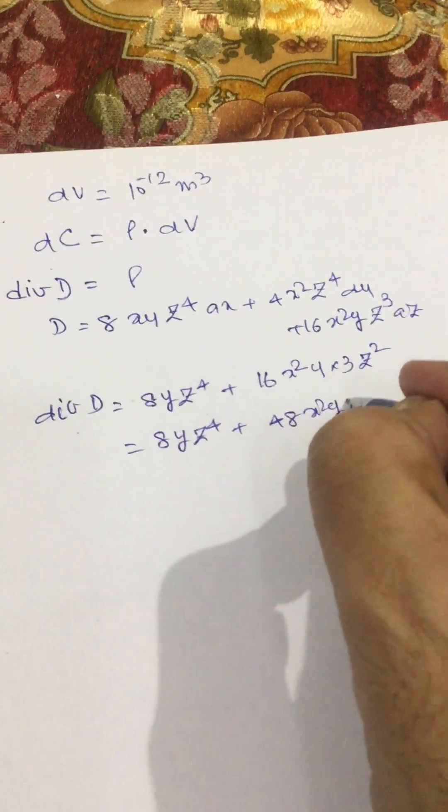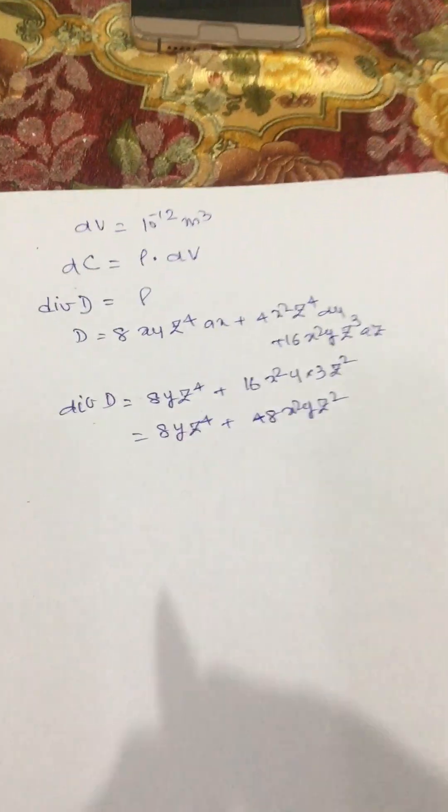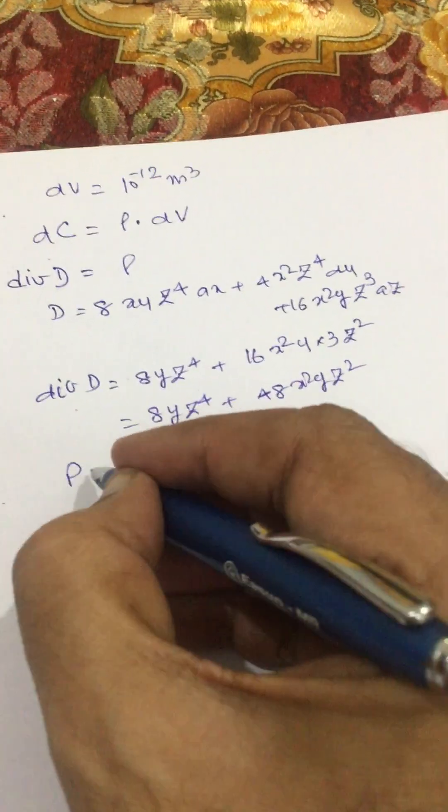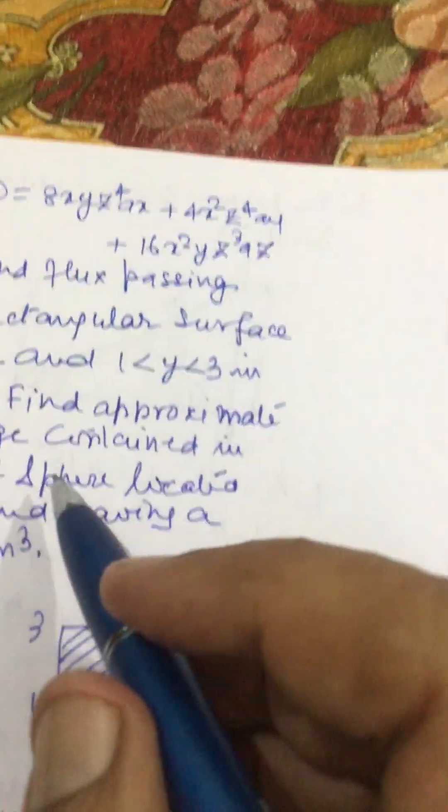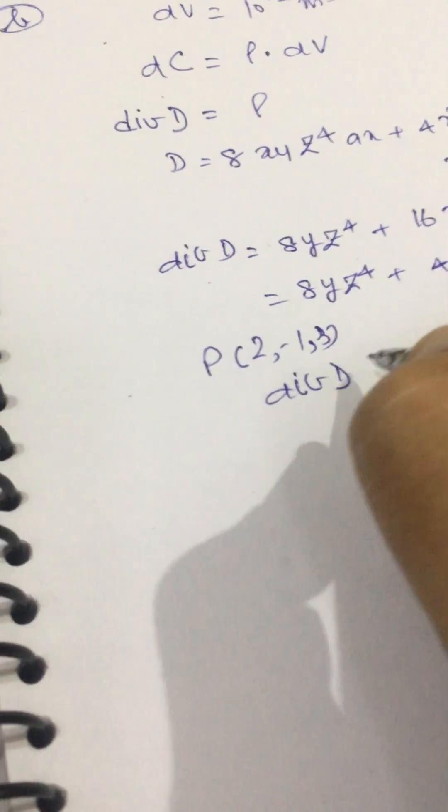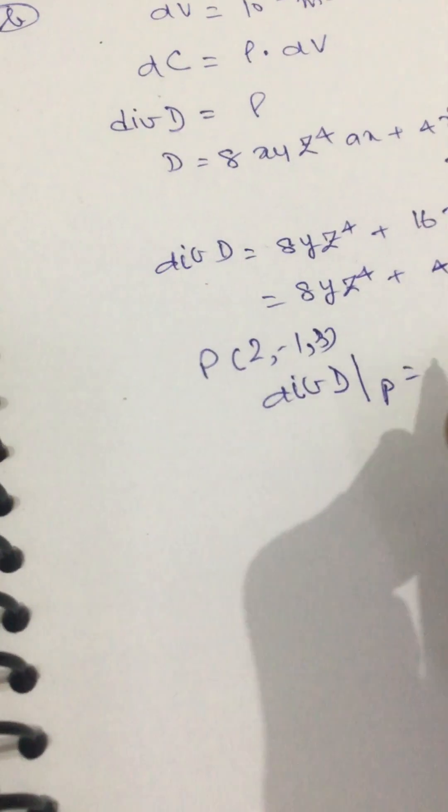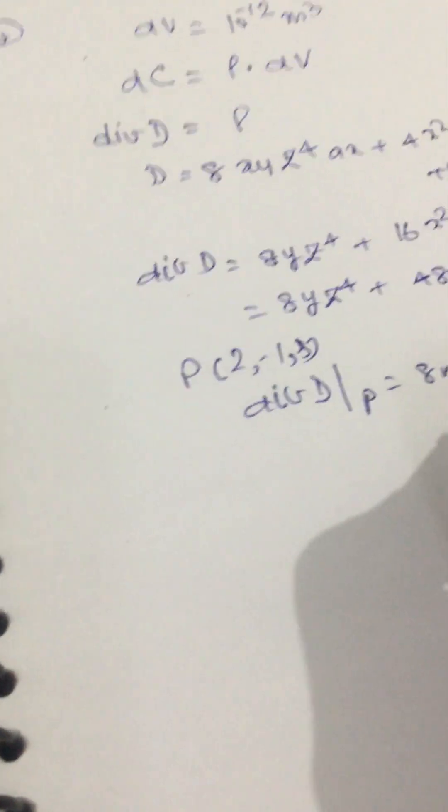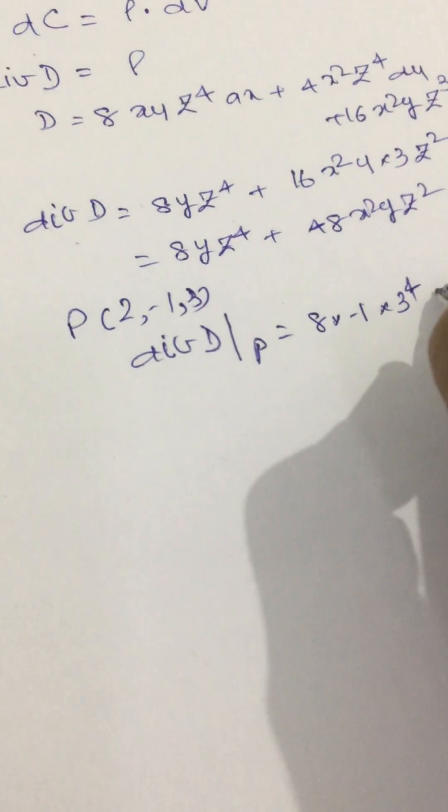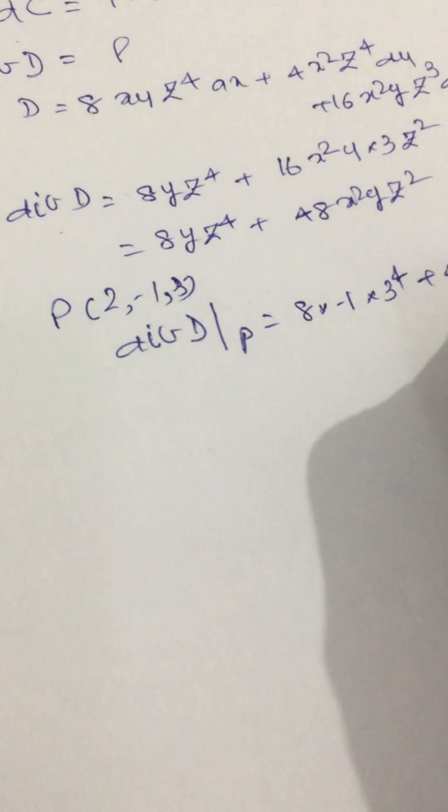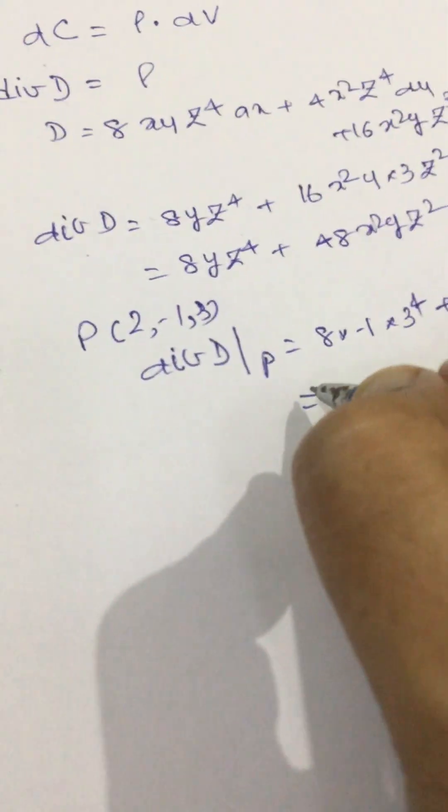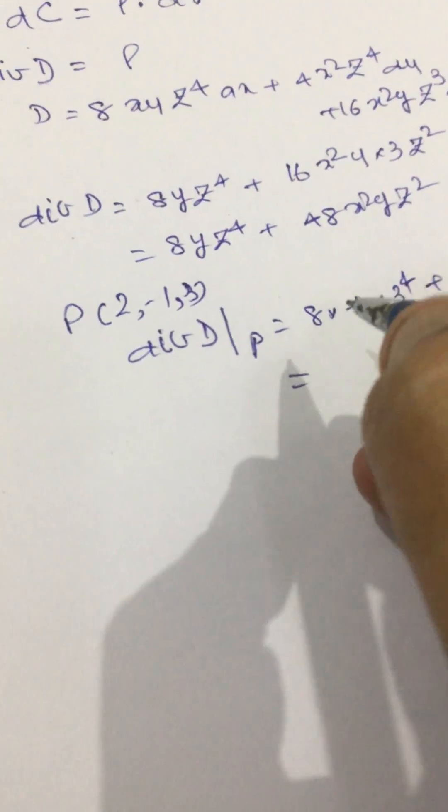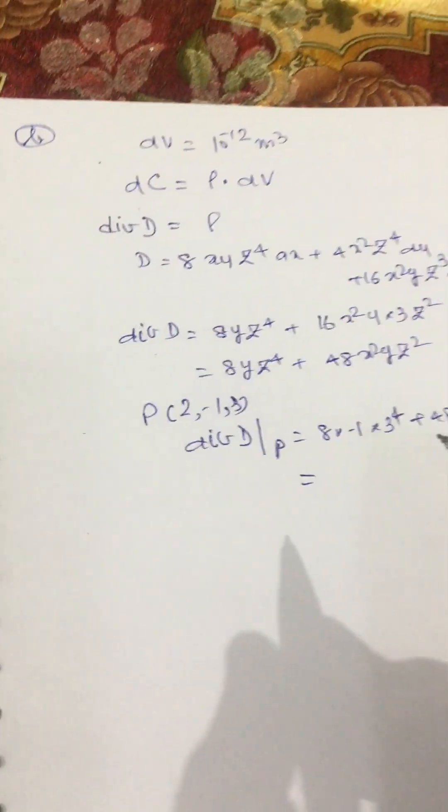And point P is (2, -1, 3) here. So divergence of D at this point at P will be equal to 8 into -1 into 3 raised to the power 4 plus 48 into x^2 is 4 into y is -1 and 3^2 is 9. This is our rho, or you can say charge density.